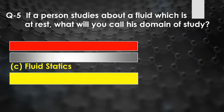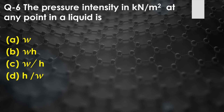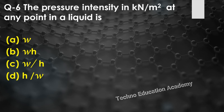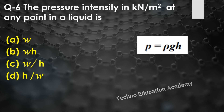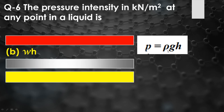Question number six: The pressure intensity in kilonewton per meter square at any point in a liquid is — option A: specific weight, option B: specific weight multiplied by h, option C: specific weight divided by h, option D: depth divided by specific weight. We know p = ρgh, and ρg is specific weight, so pressure equals specific weight multiplied by depth. The right answer is option B.